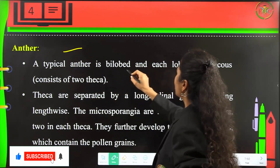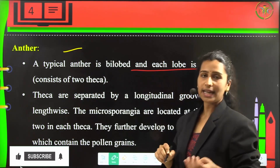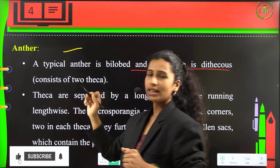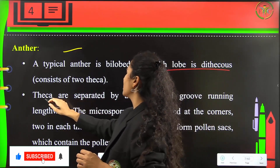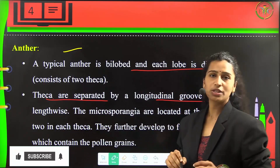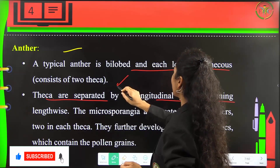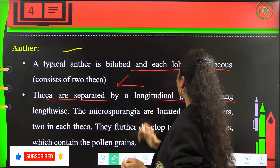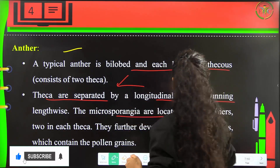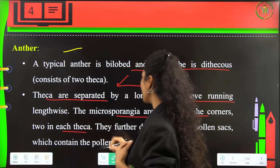The anther is a typical bilobed structure and each lobe is dithecous, which consists of two thecae — an inner and an outer theca. The thecae are separated by longitudinal grooves which run lengthwise. Microsporangia are located at the corners, two at each theca.